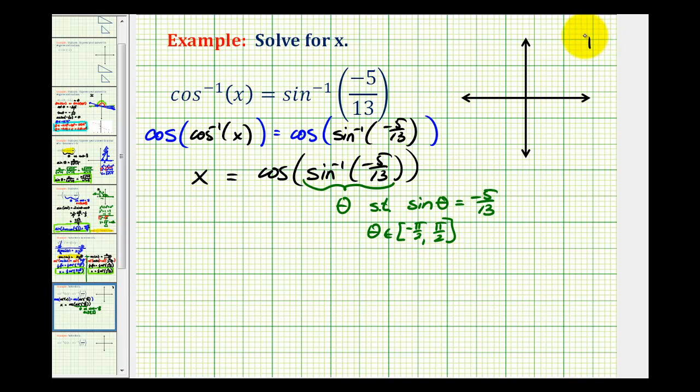This angle θ must be in the first quadrant or the fourth quadrant. Since the sine function value is -5/13, the angle must terminate in the fourth quadrant. Let's go ahead and model this angle.